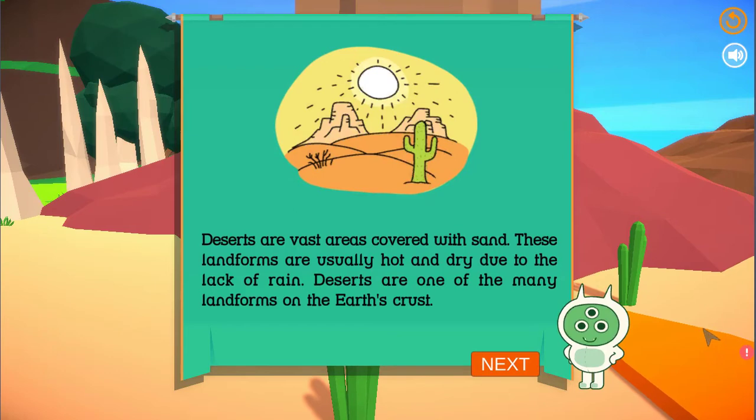Deserts are vast areas covered with sand. These landforms are usually hot and dry due to the lack of rain. Deserts are one of the many landforms on the Earth's crust.